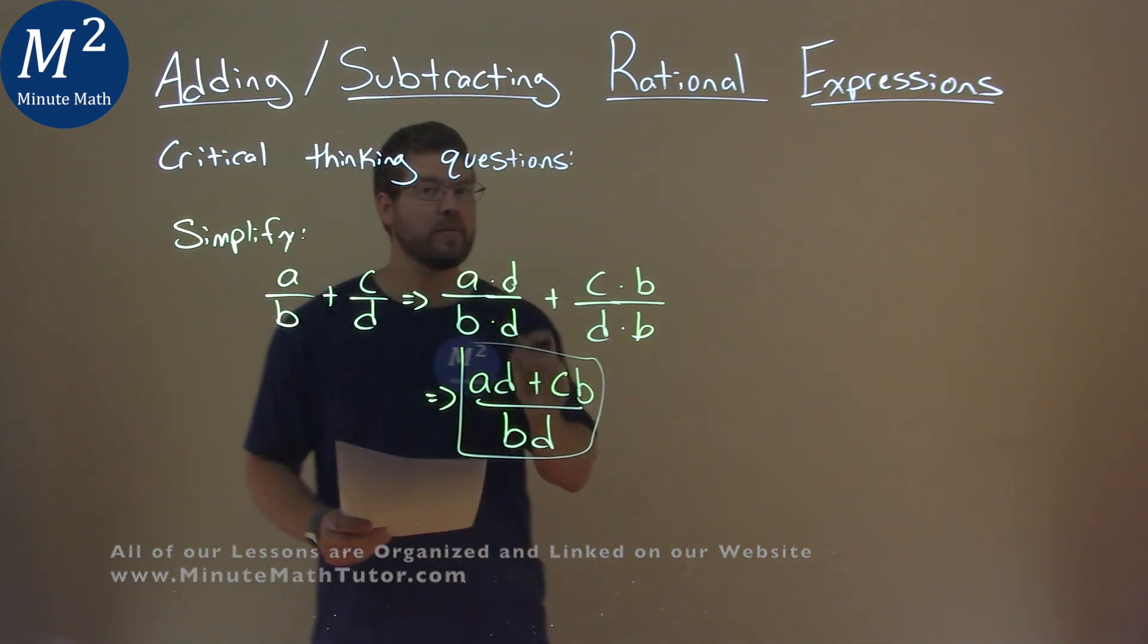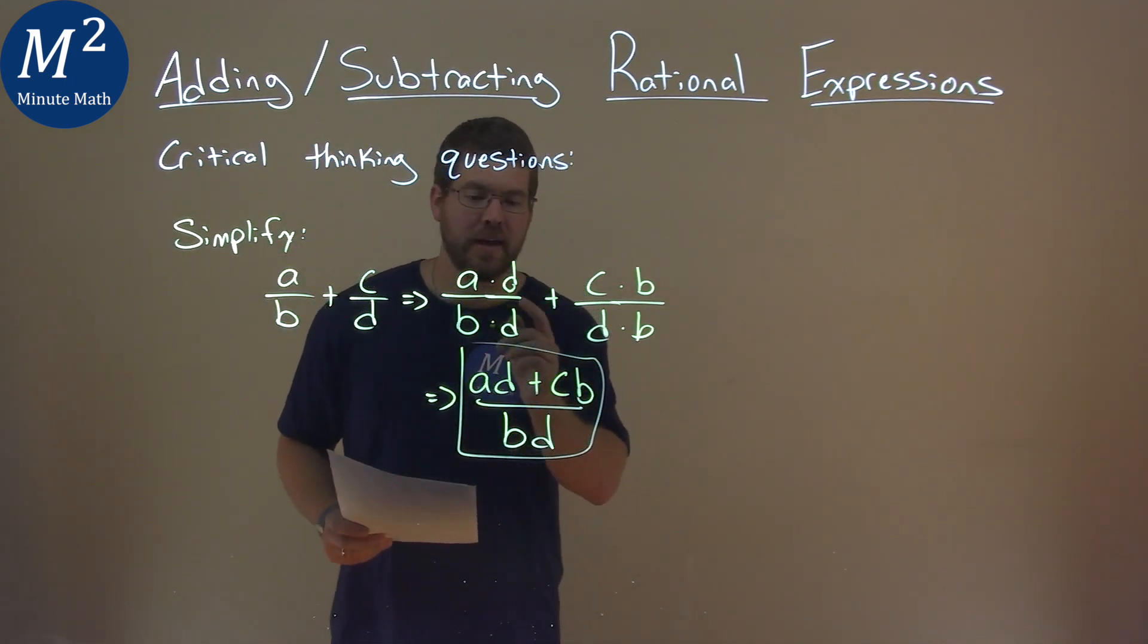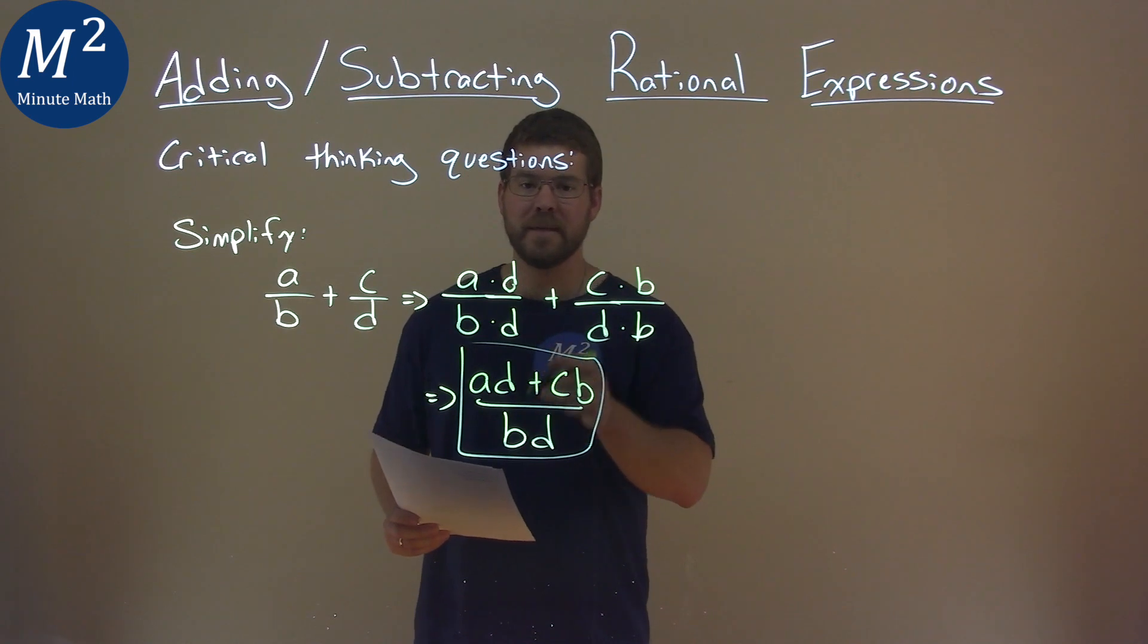Not too bad, but we've simplified, and our final answer here is AD plus CB over BD.